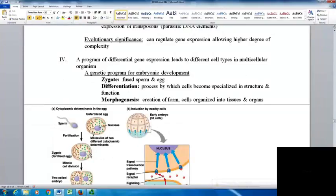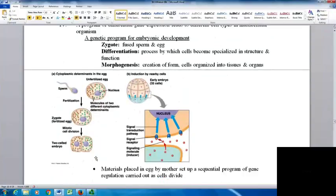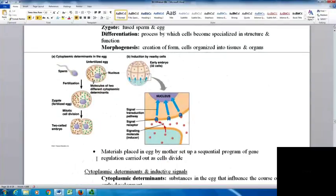Morphogenesis is the creation of form, where cells become organized into tissues and organs. To do all of this, there are materials placed in the egg by the mother that set up a sequential program of gene regulation, carried out as cells divide. The egg cell has special instructions that give the cell the plan of how to become specialized.